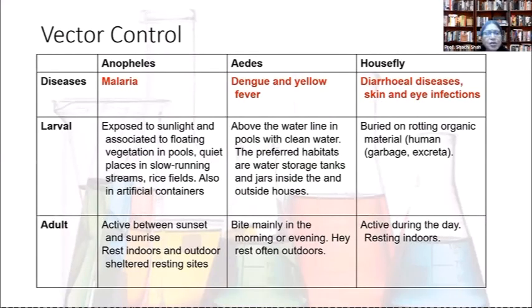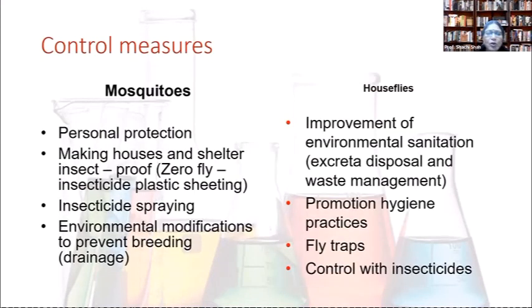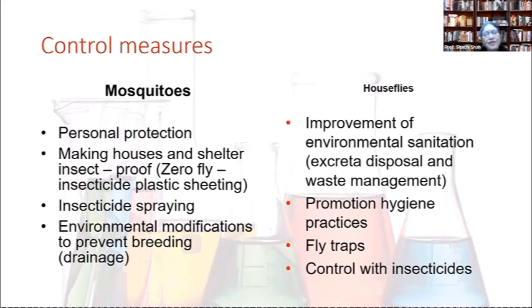Vectors include Anopheles mosquitoes, Aedes mosquitoes, and houseflies. These cause malaria, dengue, yellow fever, and skin and eye infections. Control measures for mosquitoes include personal protection, making houses insect-proof, insecticidal spraying, environmental modification to prevent larval breeding, and precautions during the rainy season.